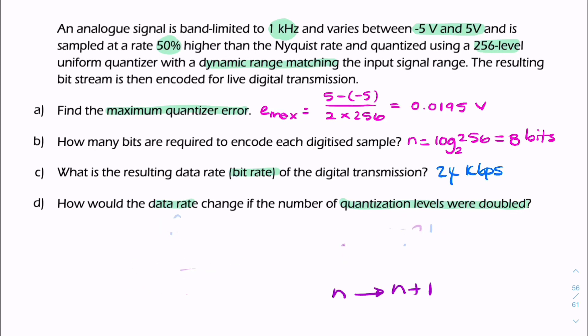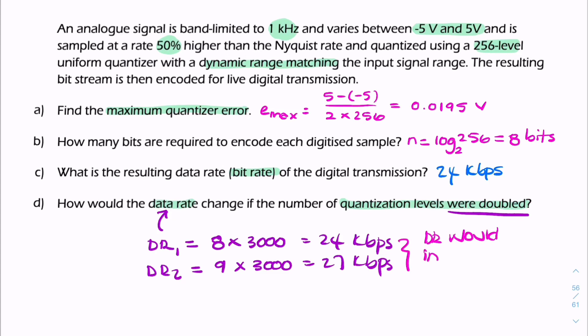So what would happen to the data rate if N is increased by 1? So at the moment, the data rate, let's call it dr. The data rate initially is just 8 times 3000 equals 24 kilobit per second. And data rate 2 after doubling the number of levels would become 9 times 3000, which is 27 kilobit per second. So you can say the data rate would increase by a factor of 9 over 8.